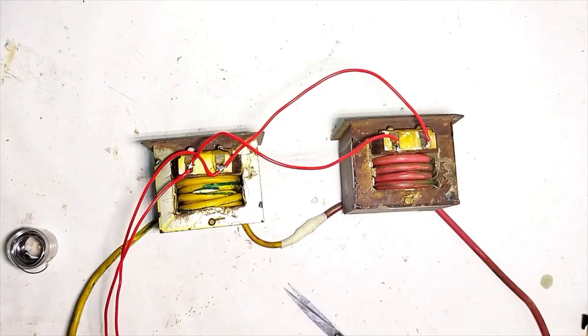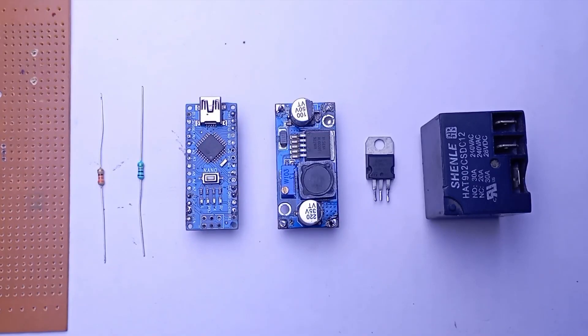The high current transformer unit is done. Let's make the timer unit. Here we have one Arduino Nano, one boost converter for boosting 5 volts to 24 volts for the relay, one N-channel MOSFET to switch the relay, one 30 amp relay, and some resistors.